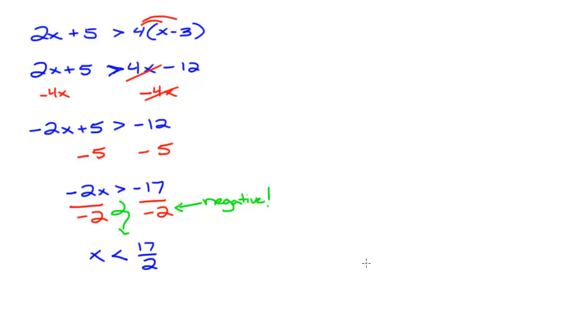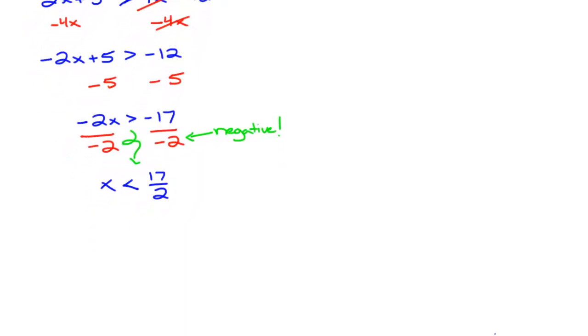Now I want to describe this solution set, which is all the numbers less than 17 halves, not including 17 halves. And I want to describe it with interval notation. How I do this is I always first write the number line version of this. So all the numbers less than 17 halves, so here's a number line.